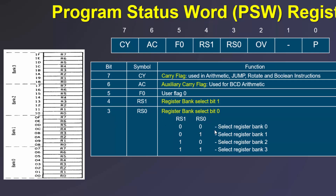If RS1 and RS0 are both 0 (00), then bank 0 gets selected. If RS1=0 and RS0=1 (01), bank 1 gets selected. If RS1=1 and RS0=0 (10), bank 2 gets selected. And if RS1 and RS0 are both 1 (11), then bank 3 gets selected.